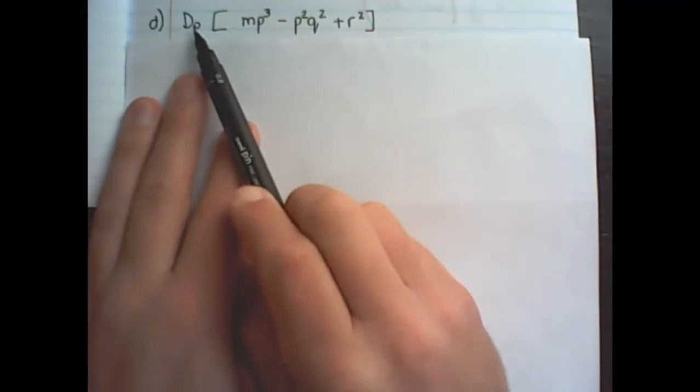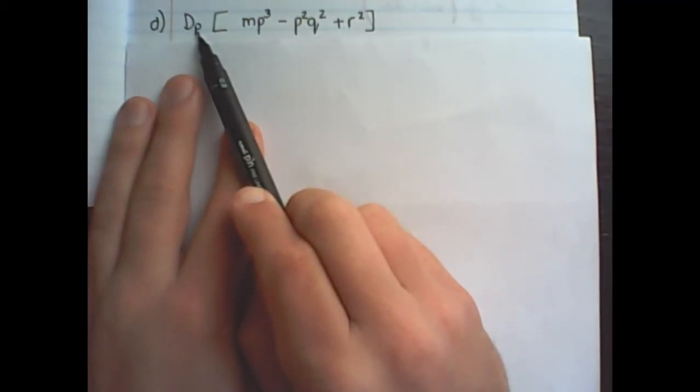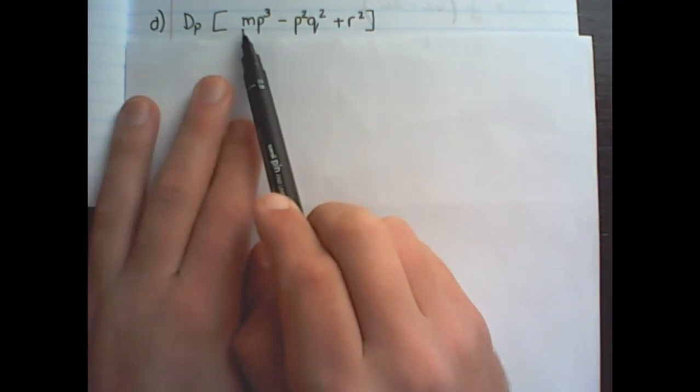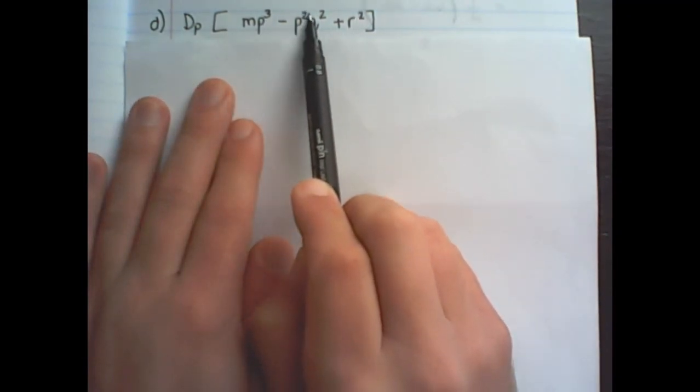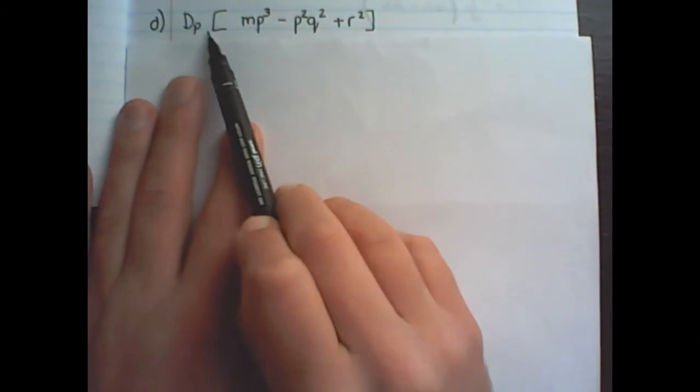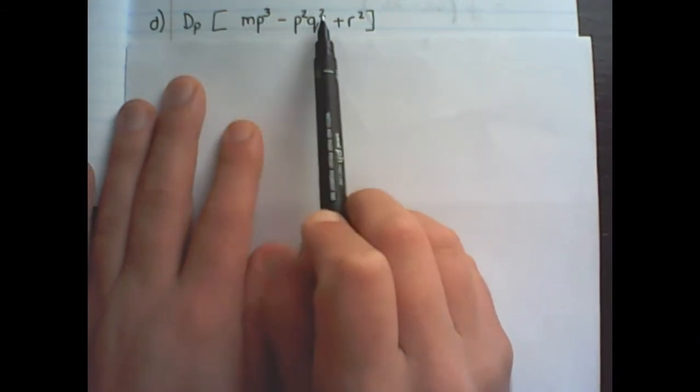Now we want to differentiate towards p where the expression is mp cubed minus p square q square plus r square. So I'm going to apply the rule of differentiation on p only.